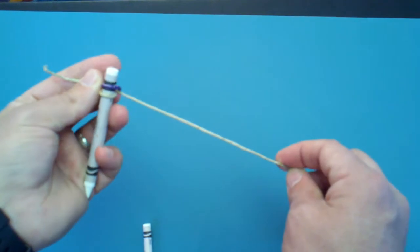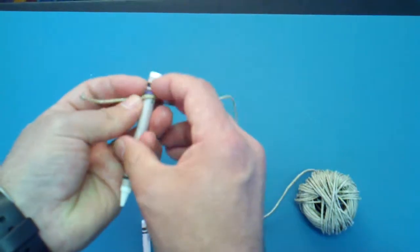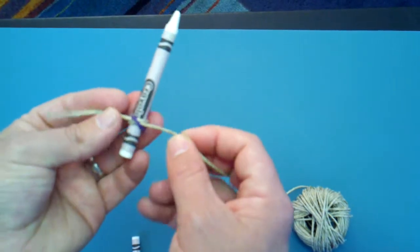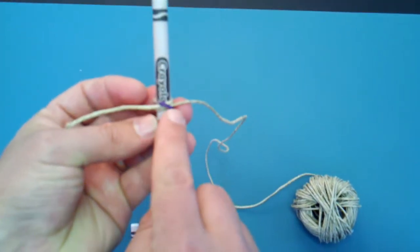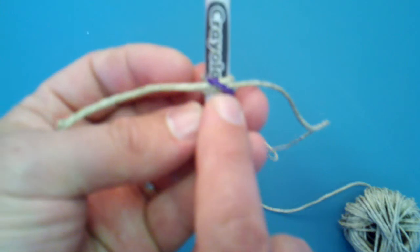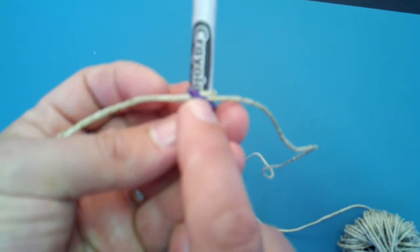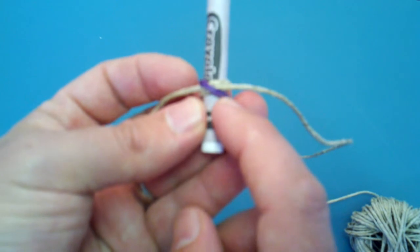Now this time when you pull it tight, you'll notice that we've actually made a clove hitch on here. And in a clove hitch, the string comes in, it goes underneath itself, it goes all the way around, and it comes back out underneath itself again.